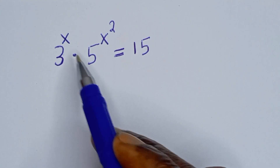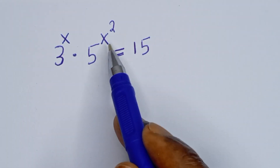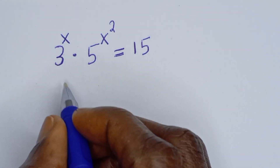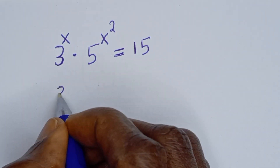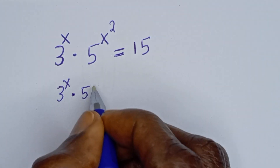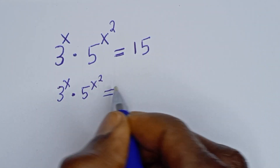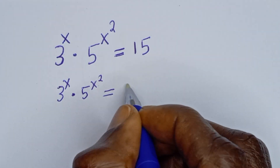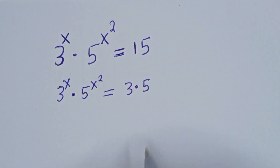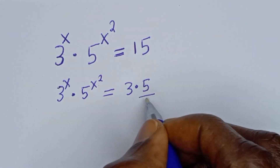Hello. How to solve for s from this equation: 3 to the power of s multiplied by 5 to the power of s squared is equal to 15. This can be written as 3 multiplied by 5, and here let's divide this by 5.